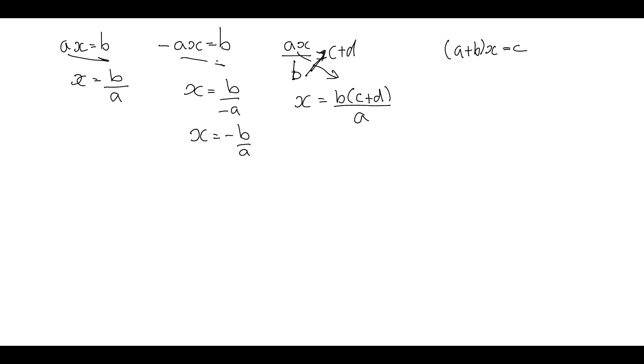In this next one, the x is multiplying a bracket already. The x is on its own. It's being multiplied by all of this bracket. So to get x on its own, we've got to divide by all of this bracket. So we're going to bring this down. So we get x equals c over a plus b.